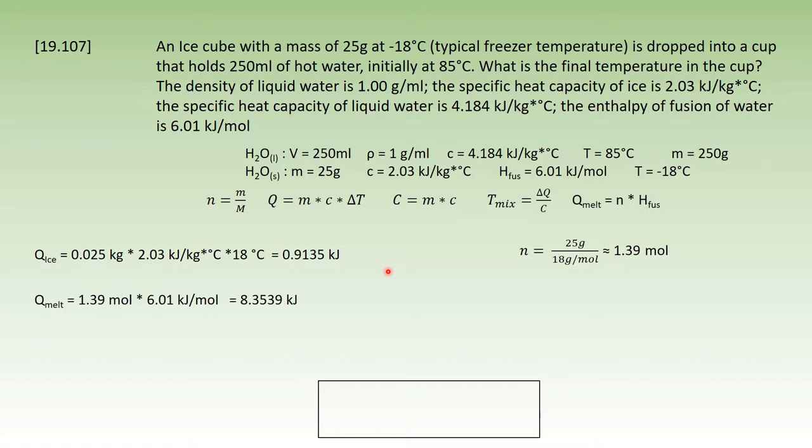Now we move on from ice and focus on water. We need to know how much energy is needed to heat up 250 ml of water to 85°C, because that's the amount it holds, and this is where the energy to heat and melt the ice comes from. Again, we use the second formula, and the answer is about 88.91 kilojoules.